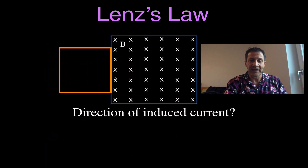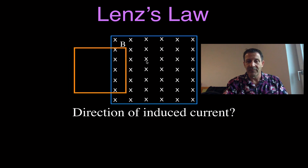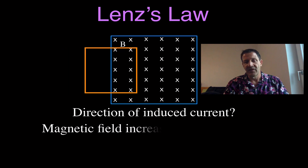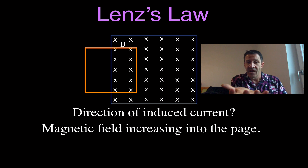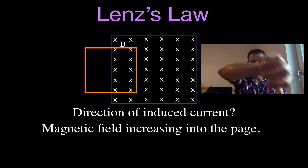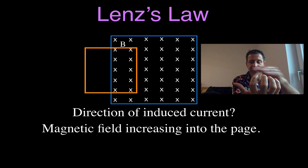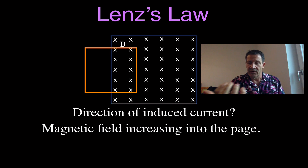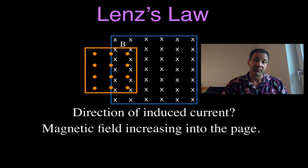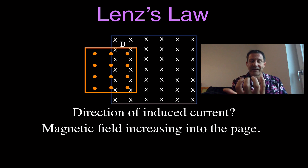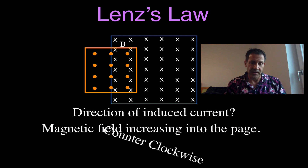Now we have the coil moving in again, but this time the magnetic field is increasing into the page. The coil doesn't want that — it's going to produce more field coming out of the page. Hold on to a section of that coil with fingers pointing out, which is inside. To negate that increasing magnetic field into the page, the coil produces magnetic field out of the page, meaning the induced current flows in the counterclockwise direction.